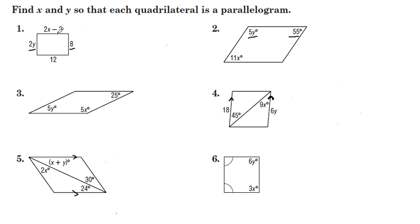If you look at number one, we use the fact that opposite sides of a parallelogram are congruent. We can set 2x minus 2 equal to 12. Then we will add 2 to both sides, and then divide by 2, x is 7. For the other pair of opposite sides, 2y equal to 8, we'll divide both sides by 2, y equals 4.